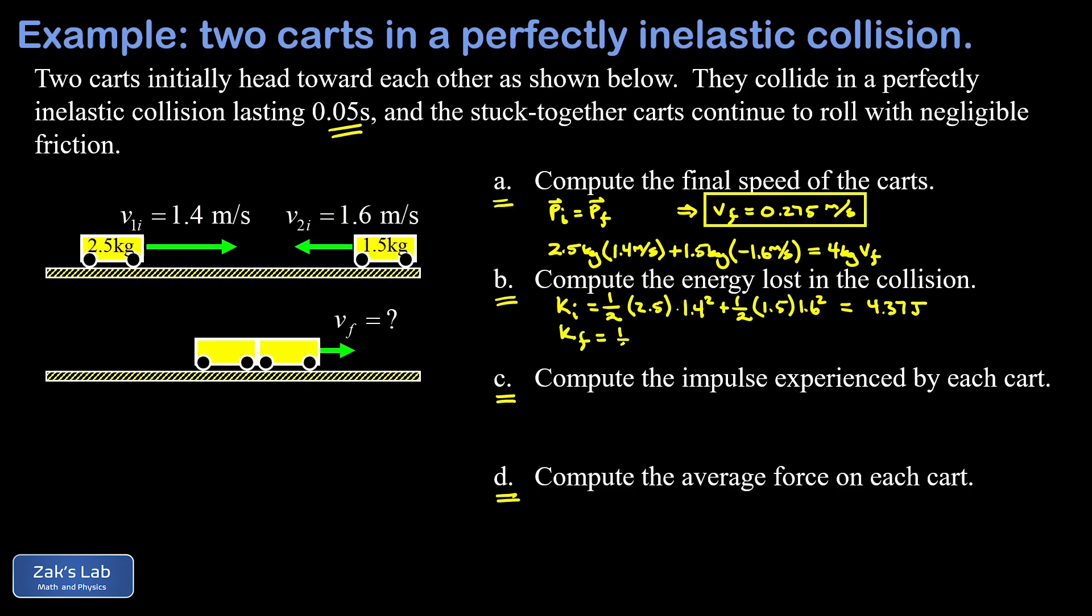Now we look at the final state where we can just treat this as a single four kilogram mass, so we have one half times four times our final speed that we computed in part a - that was 0.275 squared. This gives us about 0.15 joules. In other words, almost all the energy was lost in this collision. We take the difference between these numbers and find that 4.22 joules was lost.